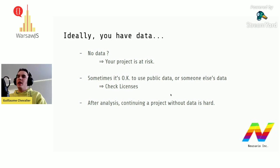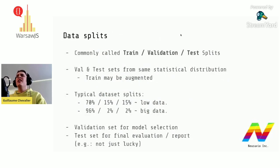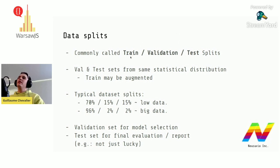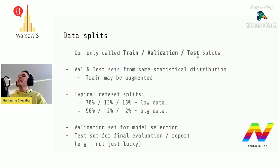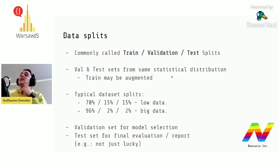If there is no data, it is required to create synthetic data to advance before real data is obtained. Two such projects can be hard but not impossible. Regarding data splits: it is good to split data into train, validation, and test sets. You train the model using the supervised learning process on training data, then use validation data to pick the best model, then test the selected model on the test set to see its score.